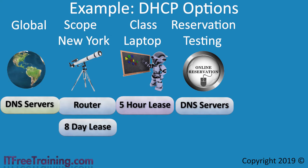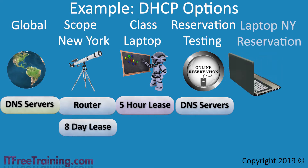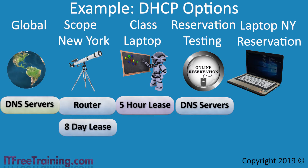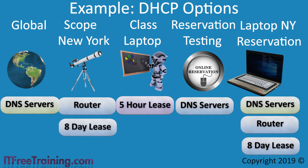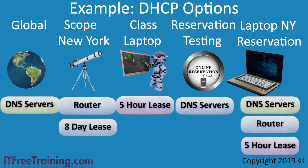Now that all the options have been configured, let's consider an example of a laptop being used on the New York network. Working from left to right, the global DNS server settings will be considered first. Next, the scope settings will be considered — this consists of the router and the 8-day lease time, with no conflicts so far. Since the laptop has been configured to use the class laptop, the option for a 5-hour lease will be added, replacing the 8-day lease. Lastly, the reservation options will be considered — these are the DNS servers which will replace the DNS servers configured from the global options. You can see that having different levels of DHCP options gives the administrator a lot of control.